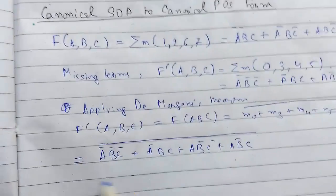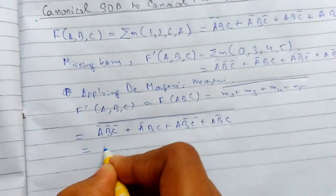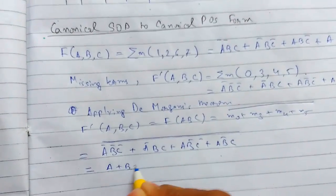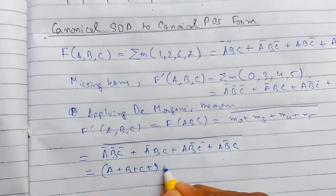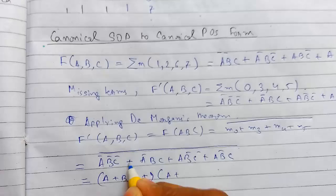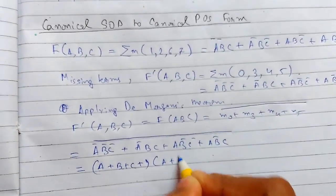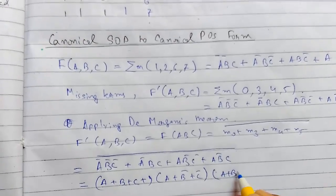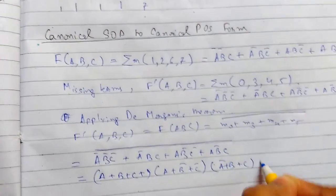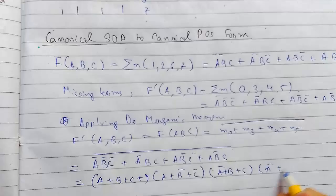Now applying De Morgan's law simply for this. First we apply it, and the double bar gets removed, plus changes to dot, and this will be something like A̅ + B̅ + C.